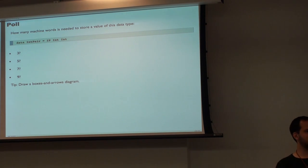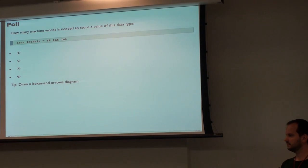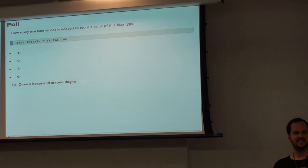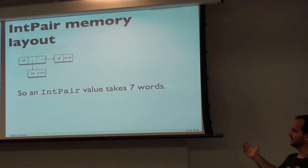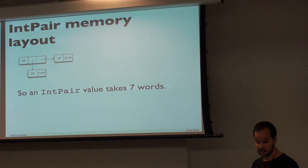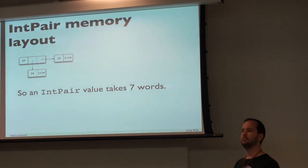Would someone like to defend the position for five? One for the constructor, and two for each Int because each Int is referencing the actual Int. And who wants to defend seven? The same thing, but you also have to point to those Ints, so you have one word for each pointer. Here's a diagram. So this is actually seven words, because it's true the two Ints have a box — two words each — but you also have pointers to those boxes, so that's seven.